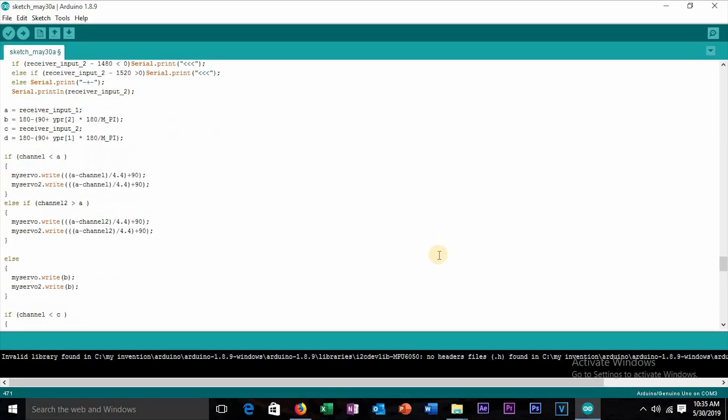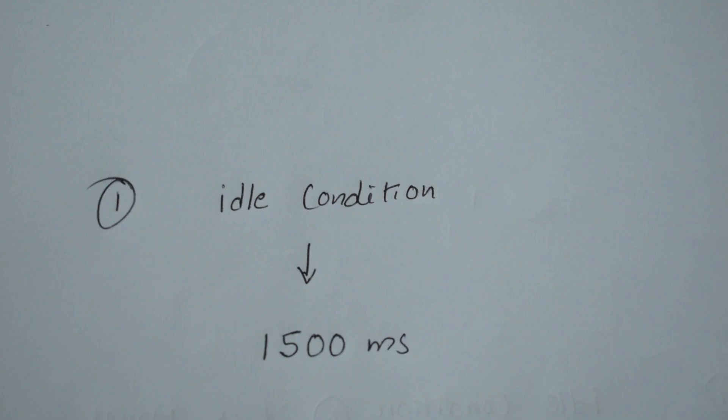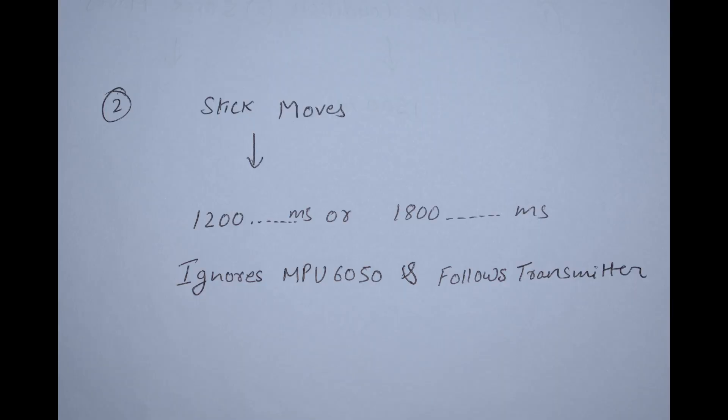To solve this problem, we have to add this if else statement. At idle condition, the transmitter sends value around 1500 ms. When the stick moves, it sends value more or less than 1500, and at this case, the servo ignores the value of MPU6050 sensor and follows transmitter signal, and it's done.